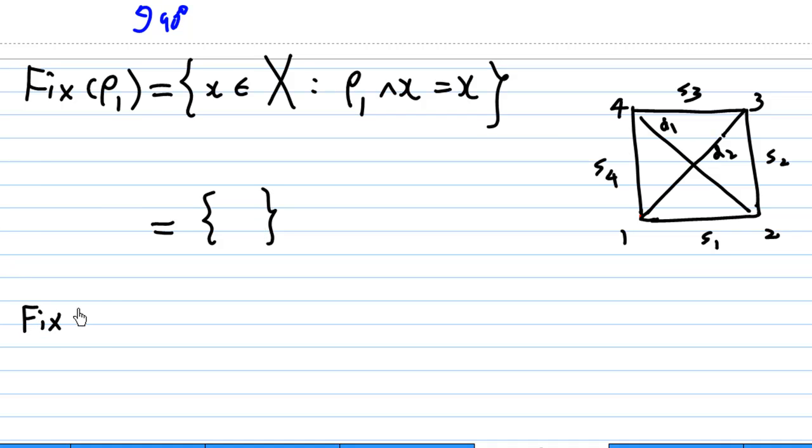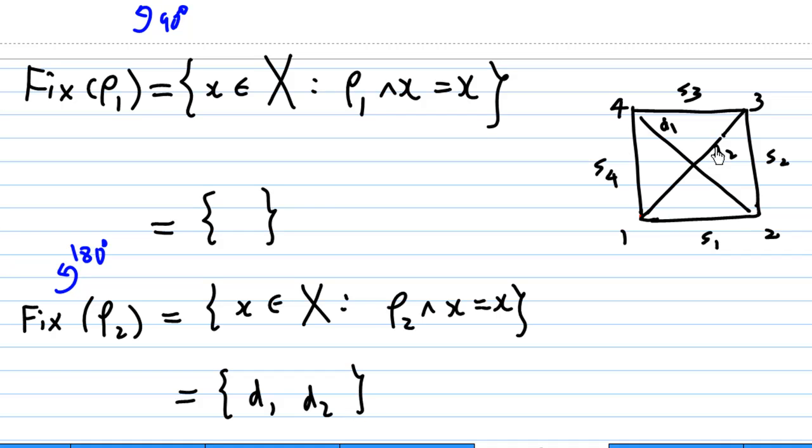Now if we look at Fix(ρ₂), ρ₂ is a rotation of 180 degrees. So if you try to figure out what are the elements inside the set such that after rotation of 180 degrees it still gets back the same, this time it is not empty. Besides the center of the square, which is not inside the set X, we find that D1 and D2 will remain fixed after you rotate 180 degrees about the center of the square. The rest of the elements S1, S2, S3, S4 and vertices 1, 2, 3, 4 will not be fixed by ρ₂.